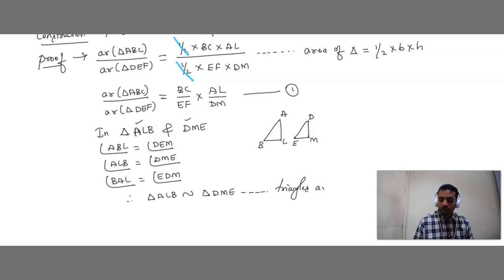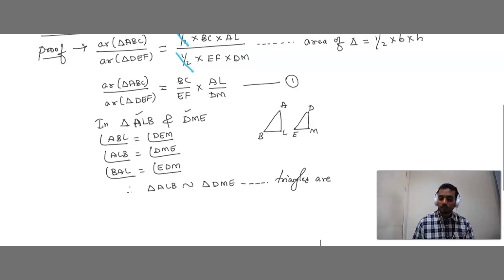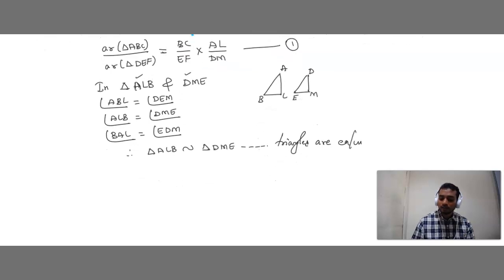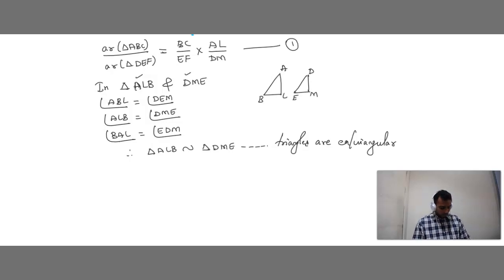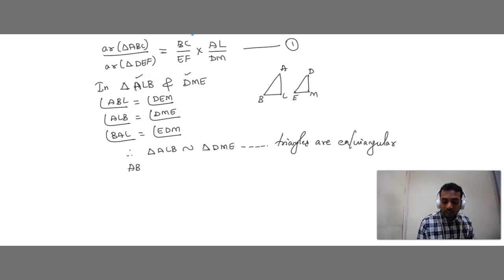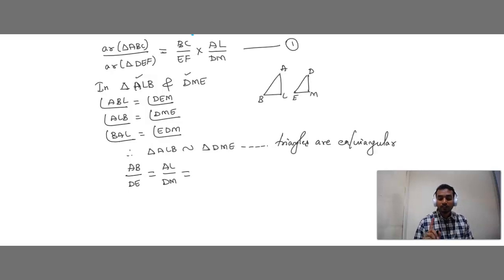Since the triangles are equiangular, both triangles are similar. If triangles are similar, then corresponding sides are proportional. The corresponding sides give: AB/DE = AL/DM = BC/EF. Now, BL is part of base BC and EM is part of base EF. We have three pairs of corresponding sides and we need to choose any two.